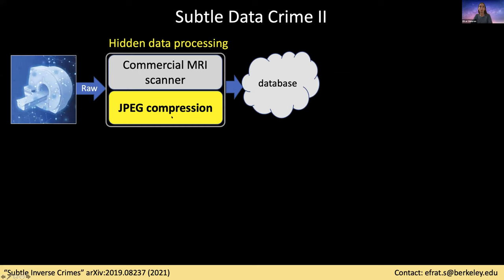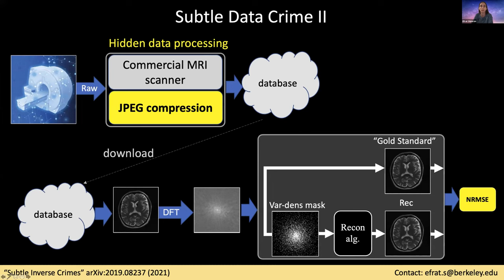Now let's look at a different pipeline, also very common for databases stored online. Databases require a lot of memory storage, and therefore it is common to apply JPEG compression to reduce the memory footprint. In this pipeline, images are JPEG compressed before being stored in an online database, and at some later point somebody downloads them, applies the forward Fourier transform, and does the same reconstruction experiment. The problem is that modern algorithms — compressed sensing, dictionary learning, deep learning — all use sparsity priors. But the JPEG algorithm also uses sparsity; it saves only some of the components in the discrete cosine transform domain. So if the JPEG algorithm already sparsifies the data, then algorithms that assume sparsity are likely to perform very well, because a lot of the job was already done in the early preprocessing.